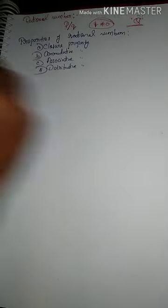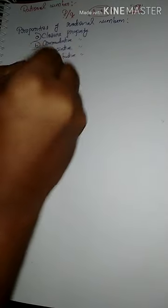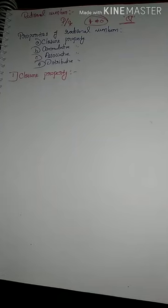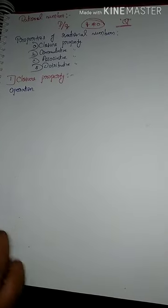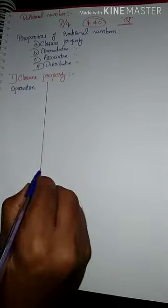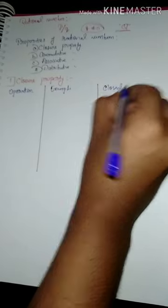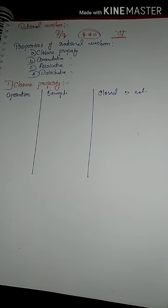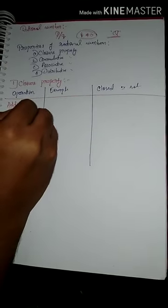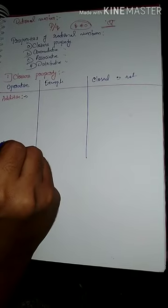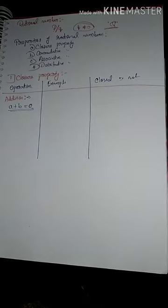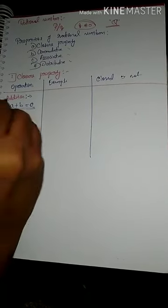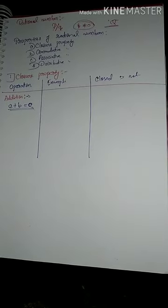The first one is closure property. Let us check closure for rational numbers. There are four basic operations in mathematics: addition, subtraction, multiplication, and division. The closure property for addition states that if we add any two rational numbers, we get a rational number — that is, a plus b equals c.